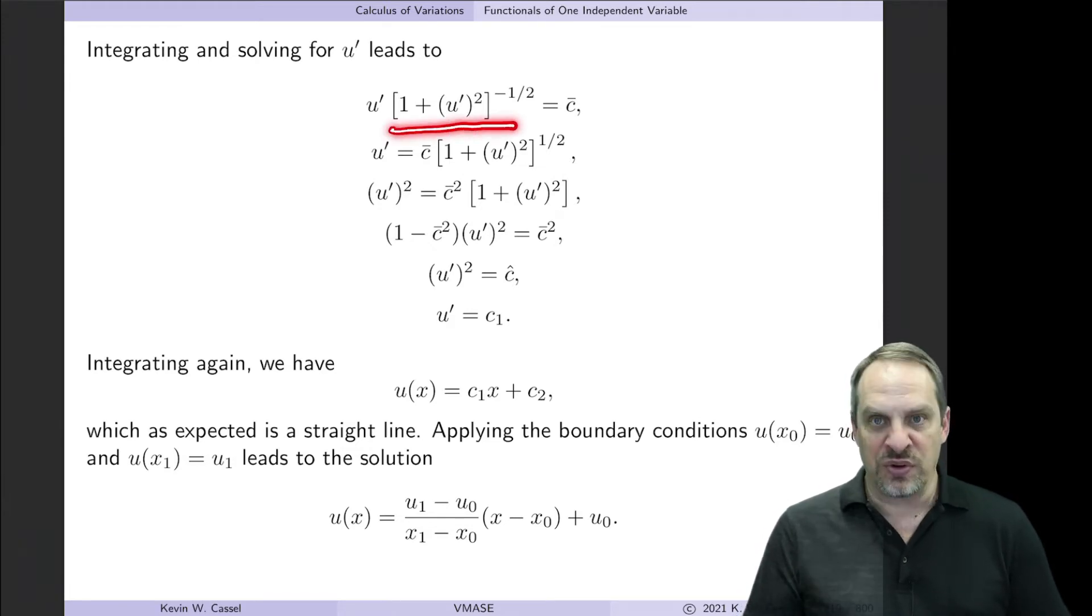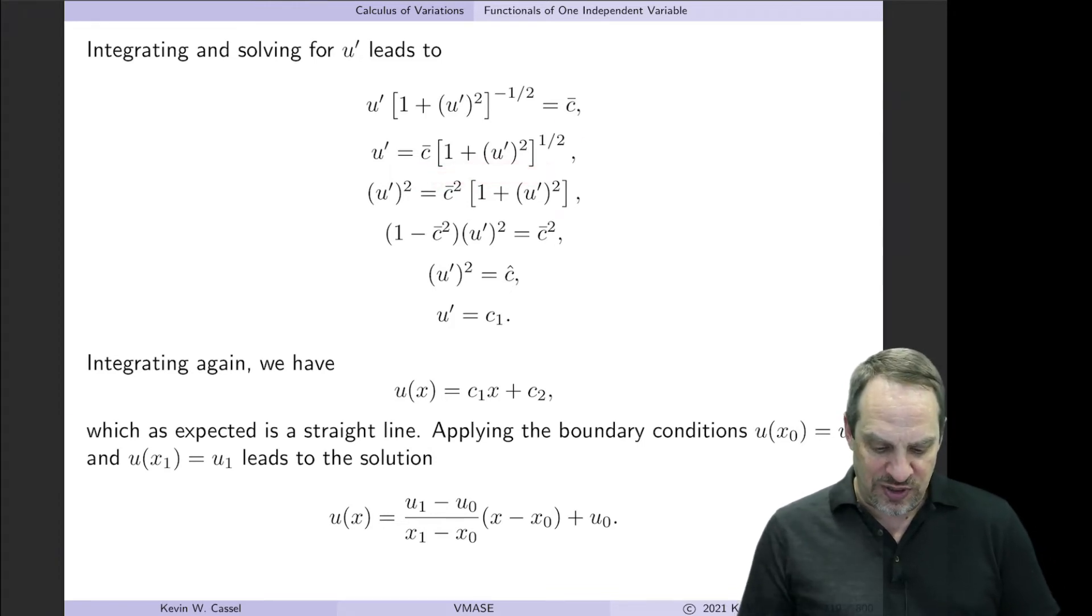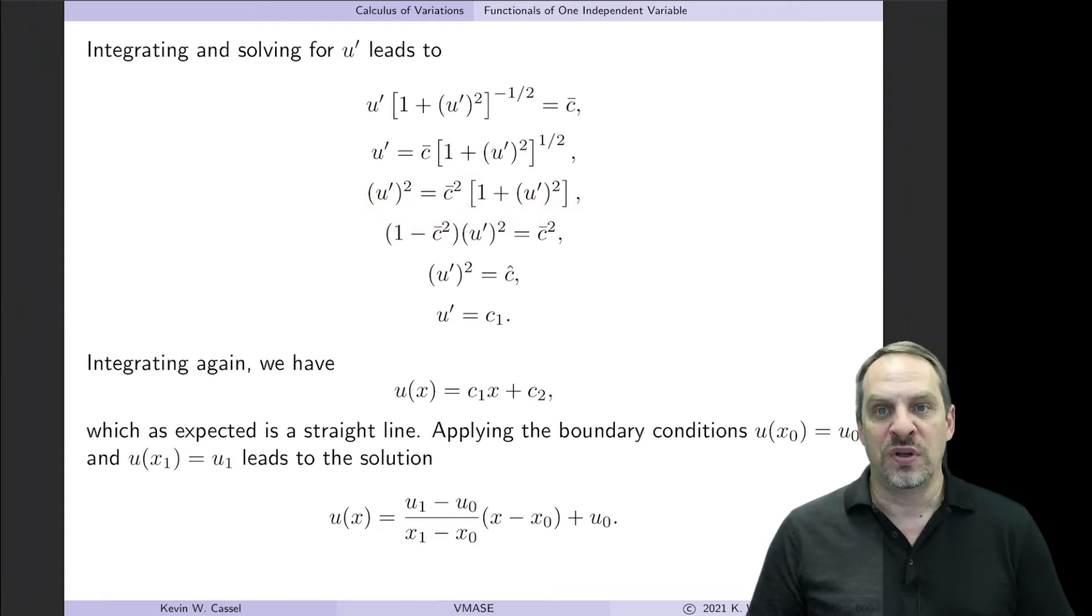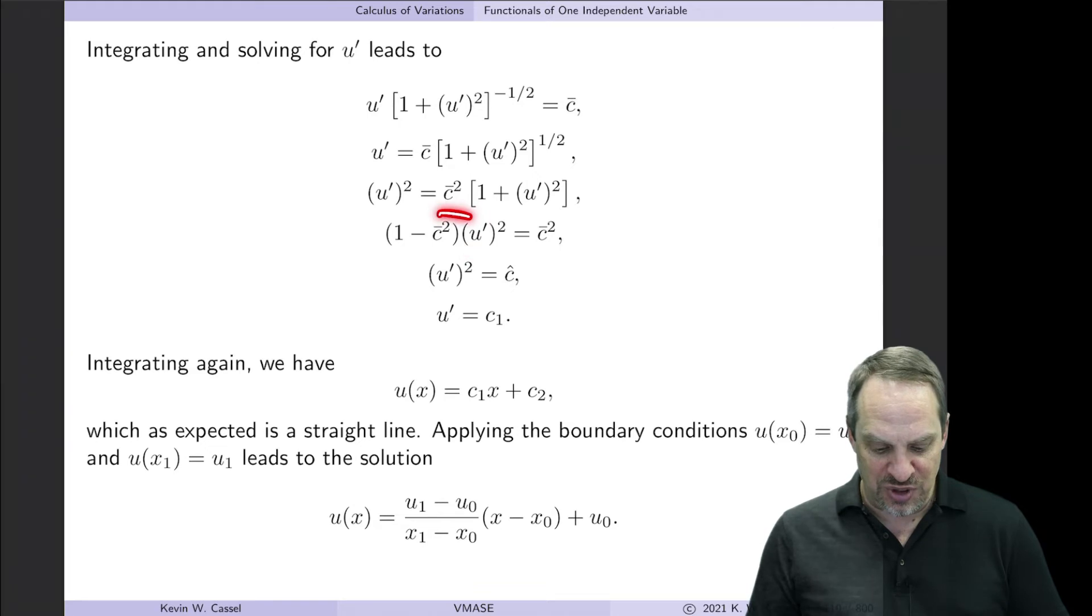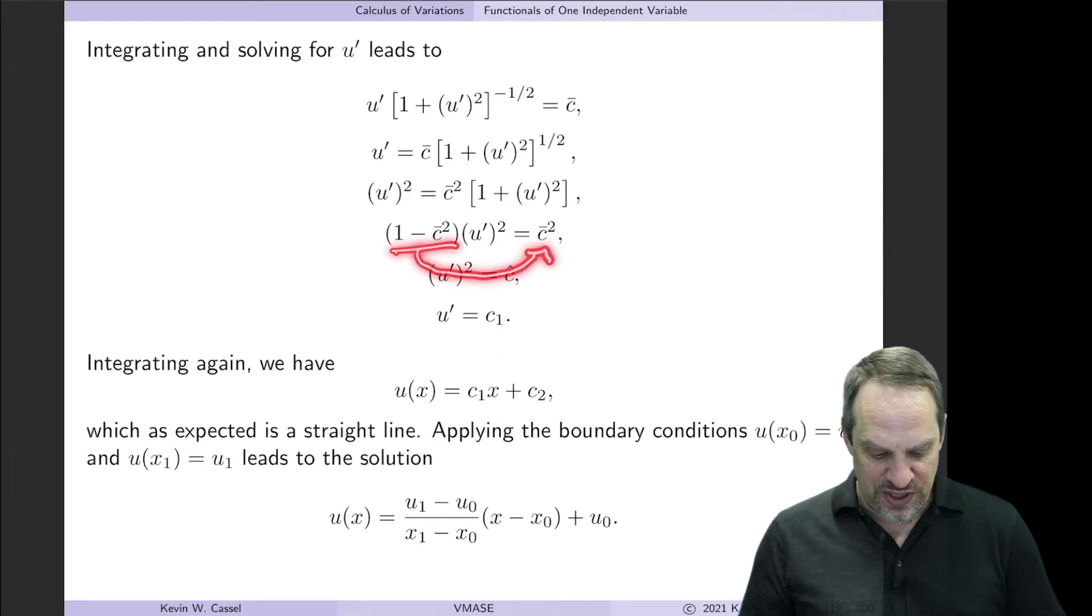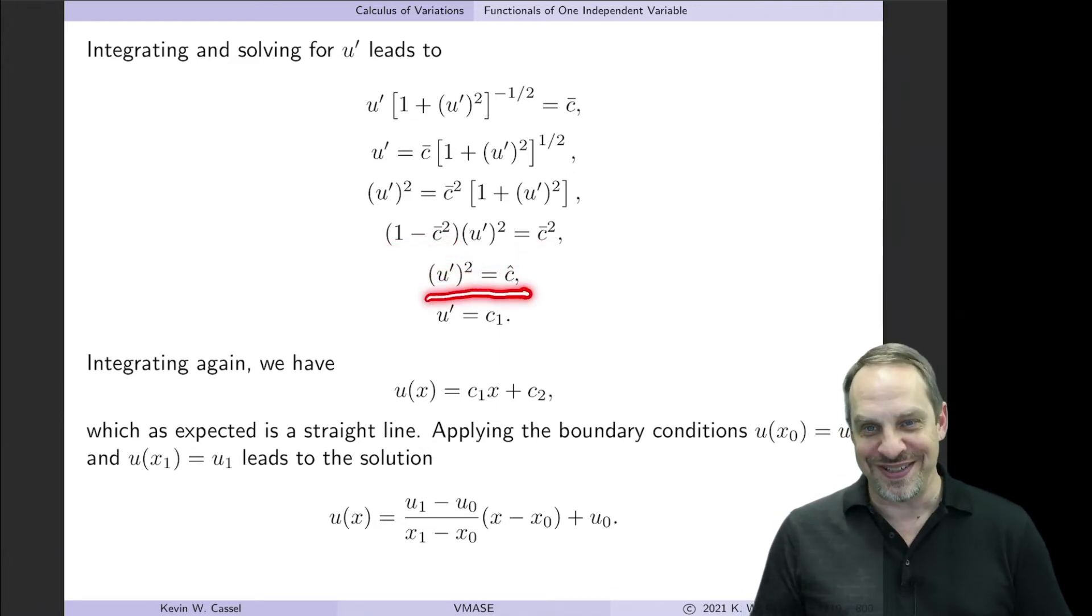First of all, this is 1 over the square root. Let's take that over to the right-hand side. So it'll be u' equals a constant times the square root of 1 plus u' squared. Now let's get rid of the square root by squaring both sides. So I have u' squared on the left. I have the constant squared, and then 1 plus u' squared. Now I can gather all of the u' stuff on the left-hand side. So I have 1 times u' squared, and I have c̄² times u' squared. Bring that over to the left, so it's minus. And that's equal to my constant c̄².